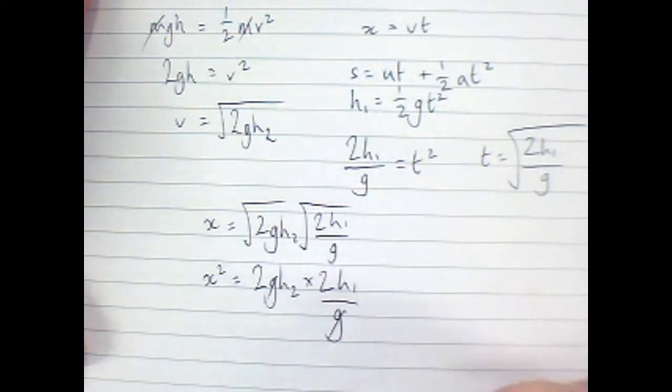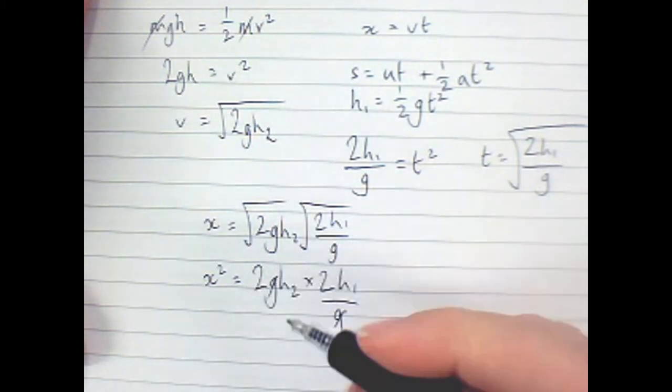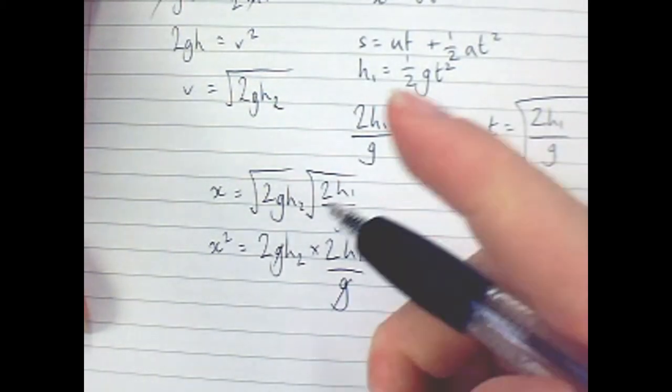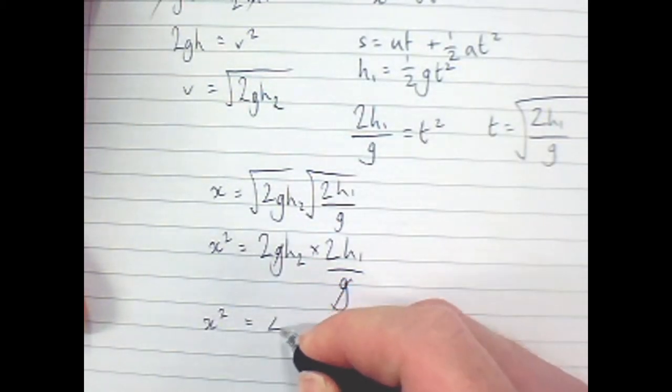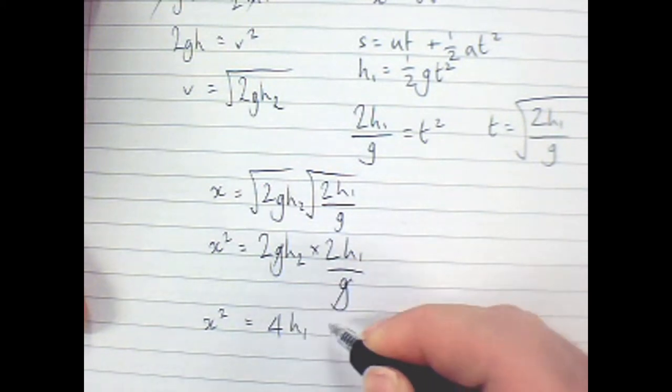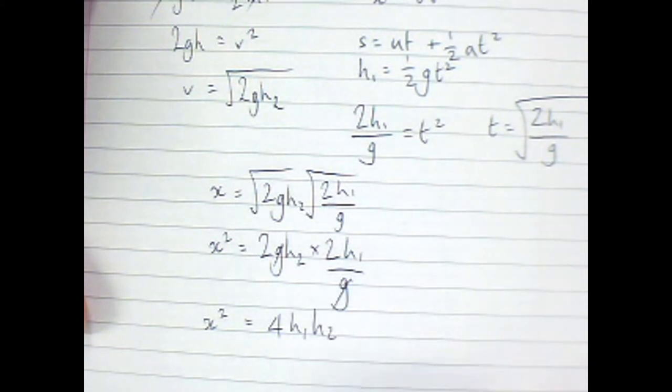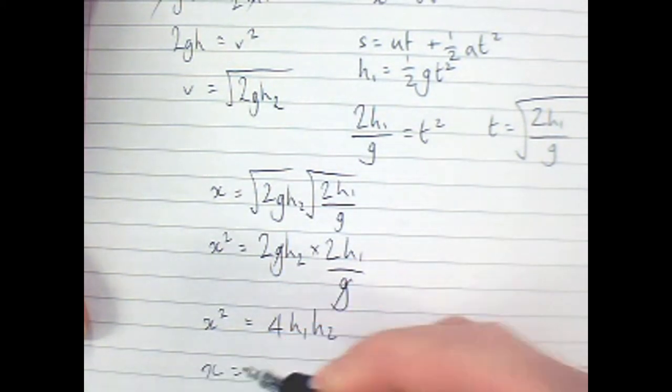So now my G's cancel. 2 times 2 is 4. So I get X squared is 4H1 times H2. So X, then, is the root of all that.